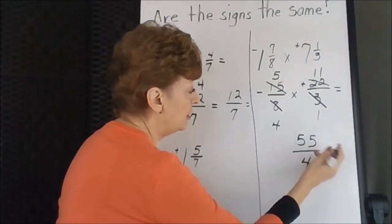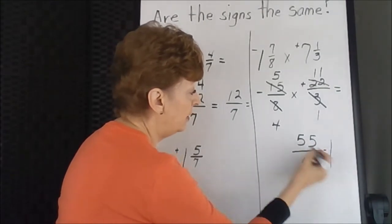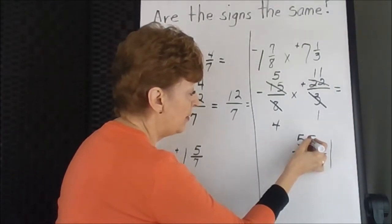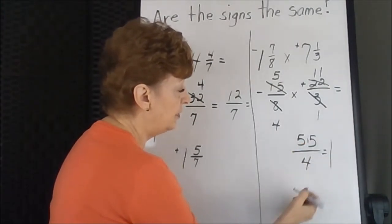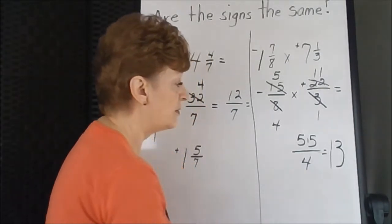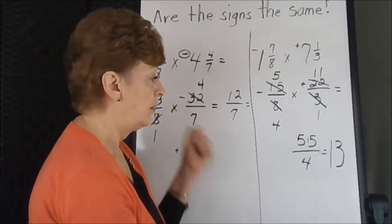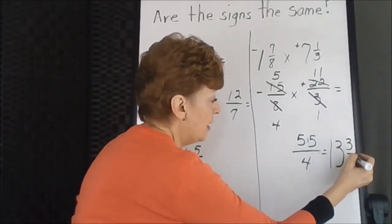Let's reduce this fraction. 4 divides into 5 one time with one left over. Now it's a 15. 4 divides into 15 three times, we can get 12. 3 times 4 is 12, 13, 14, 15. There's 3 fourths remaining.